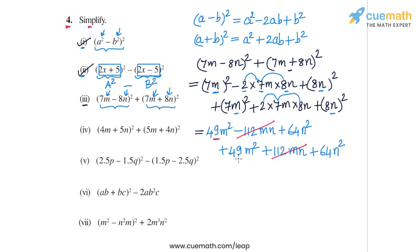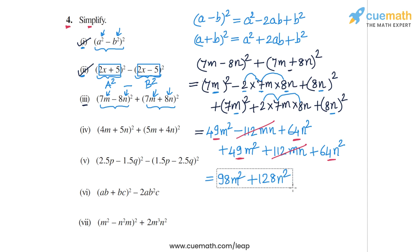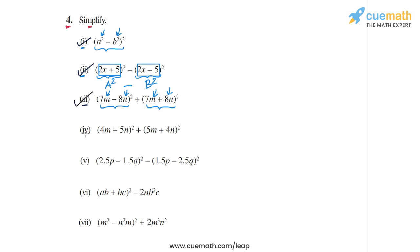The -112mn and +112mn cancel out. The m² terms add to 98m² and the n² terms add to 128n². So the simplified form is 98m² + 128n².